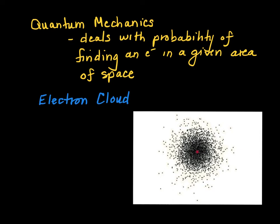Now that we've discovered that Bohr's model only works for atoms with one electron, we're going to move on to the last model that's currently fairly well accepted. It's called quantum mechanics. It deals with the probability of finding an electron in a given area of space. So we've given up trying to figure out exactly where the electron is.